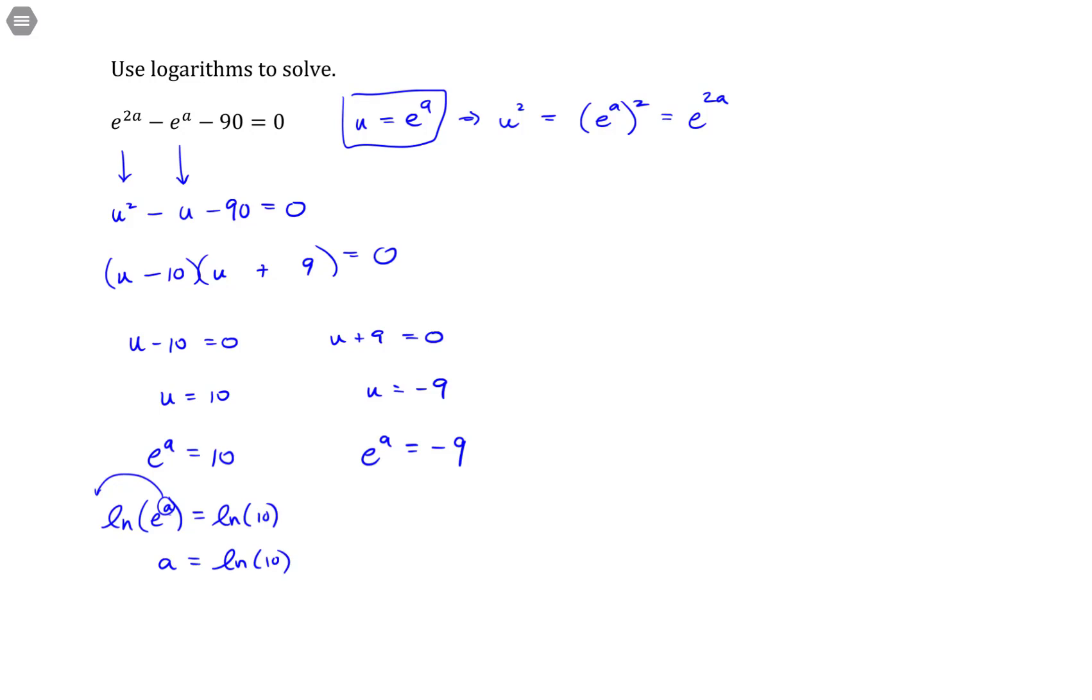And similarly, another way to think about this is if you just change it to logarithmic form. So logarithmic form would be a log base this value, so that's a natural log, of the result, so of negative 9, equals the exponent.